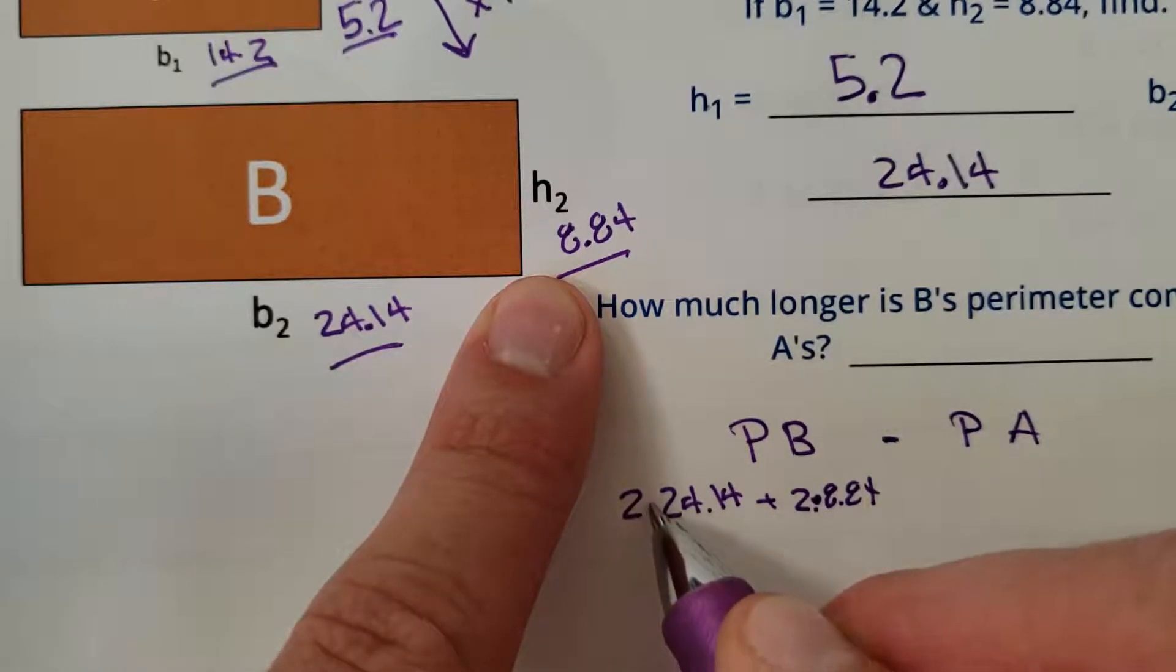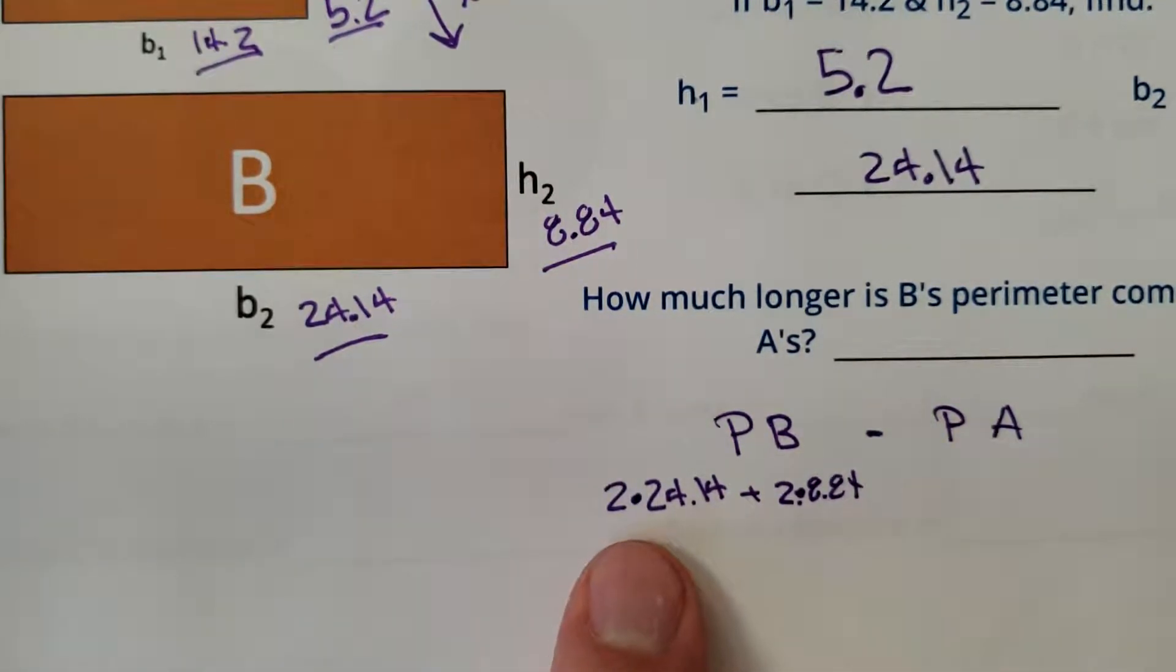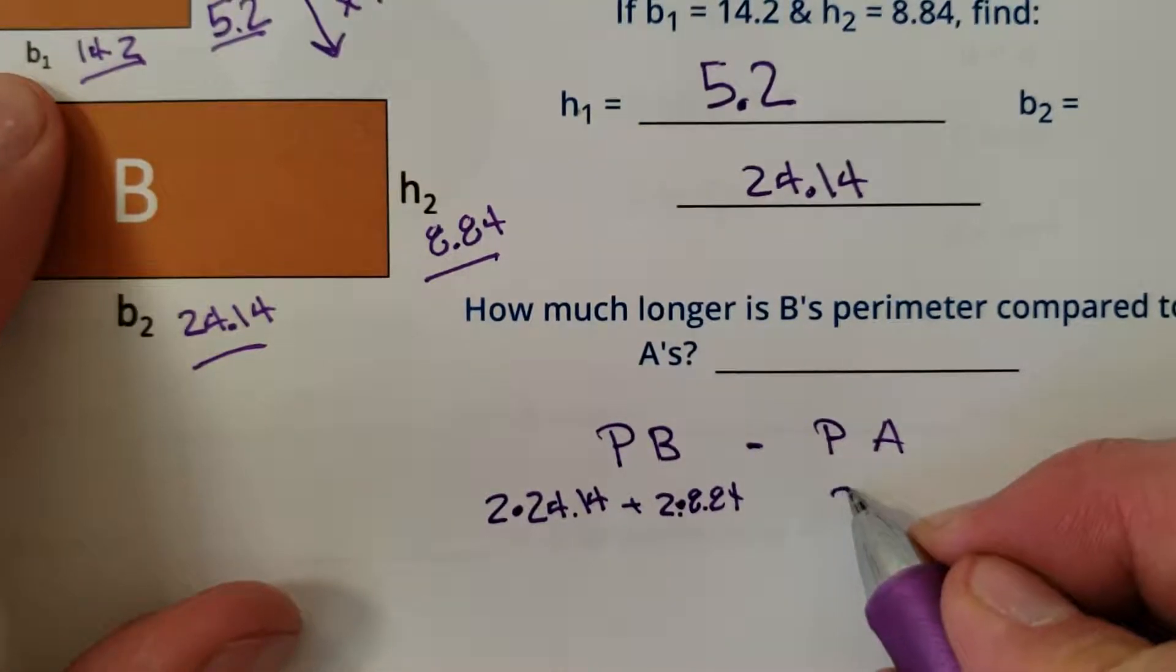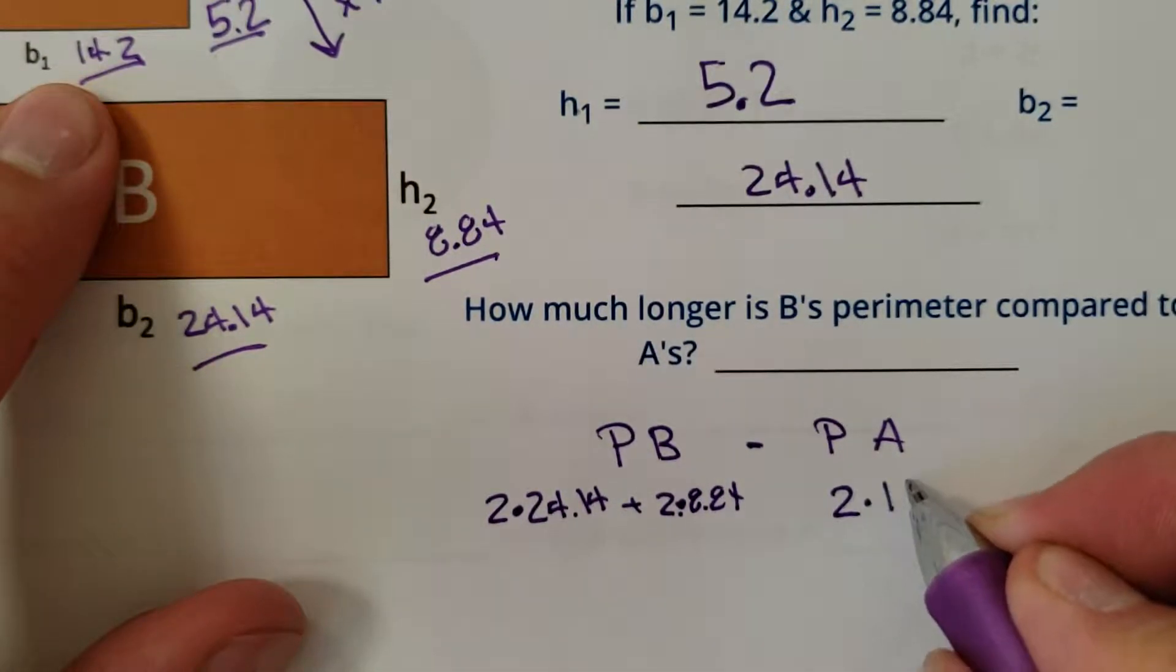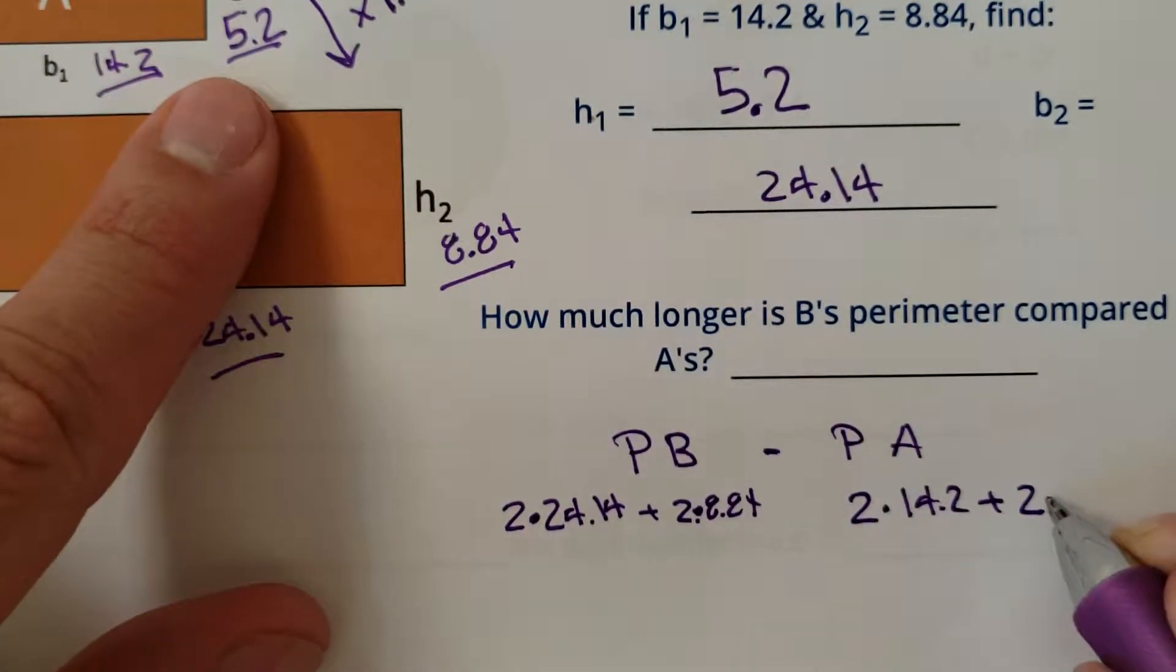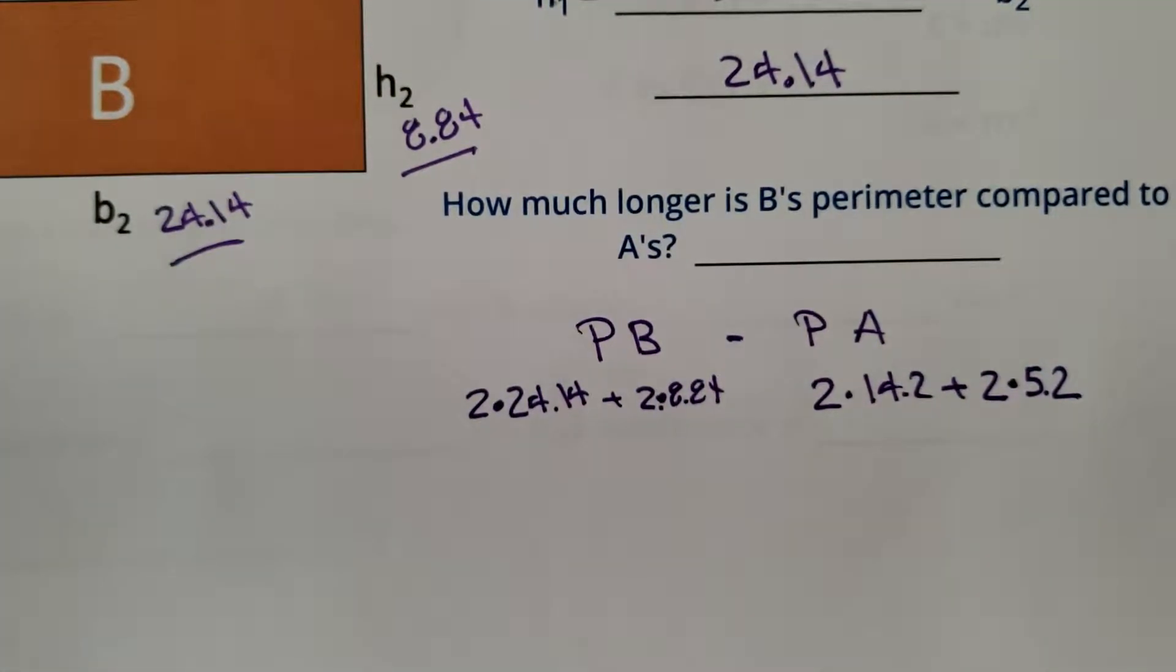That should be a times. There we go. Sorry about that. There we go. Two lengths plus two widths. All right. Perimeter A is going to be two times 14.2 and two times 5.2. All right. There we go. So let's figure out all these perimeters here.